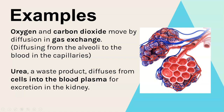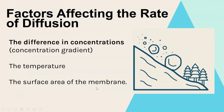This movement happens until you reach equilibrium, which means you've got the same concentration on both sides. Examples of where this happens in biology: oxygen and carbon dioxide move by diffusion in gas exchange. In the alveoli, oxygen diffuses from inside the alveoli into the blood capillaries, and carbon dioxide diffuses from the blood capillaries back into the alveoli to be exhaled. Urea, which is a waste product, diffuses from the cells where it's made into the blood plasma and is then transported to the kidneys to be removed.